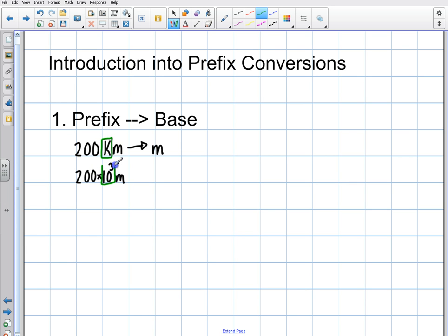You just substitute it in. You don't have to do any dimensional analysis. So you just swap it out. It's a swap, because what is it? It's basically saying kilo equals 10 to the 3. It's a swap. So you just swap it out. That's it. You're done. 200 times 10 to the 3.